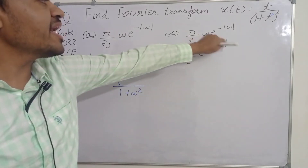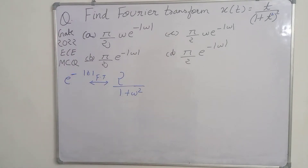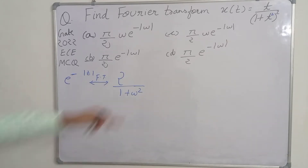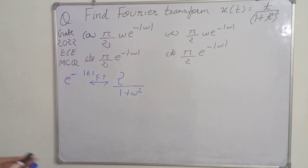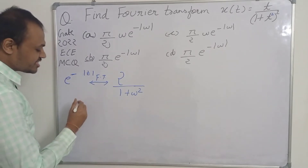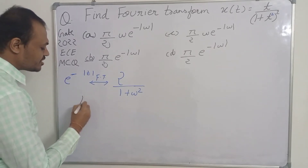Omega is involved via the duality property. If we think backwards, we first need to handle the t multiplied in the numerator, and then apply the duality property. The t in the numerator corresponds to multiplication in frequency domain, which is the differentiation-in-frequency-domain property.